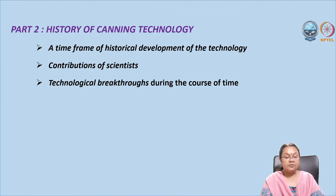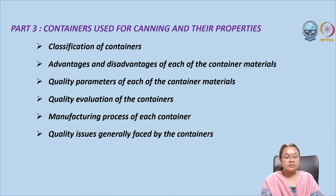In the history of canning technology section, we will discuss how canning evolved, the different people who contributed to it, and their contributions. In part three on containers, we will discuss classification of containers, their advantages and disadvantages, why we moved from different materials, and why we currently use aluminium cans. We will also discuss quality parameters, how to evaluate container properties, and the manufacturing process of containers.